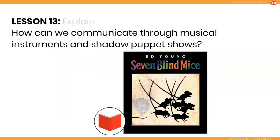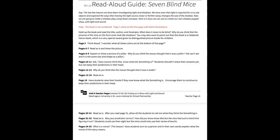You'll say to students: now you will get to use all that we have learned in this unit to make your own sound and light show based on the book Seven Blind Mice. You'll read the story to the students, reminding them to think about how they will bring the story to life with music and shadow puppets. You can find a read-aloud guide for this on teacher page 16.